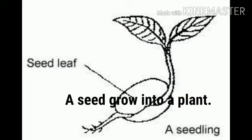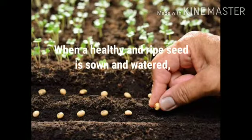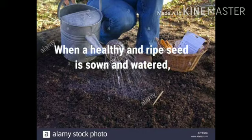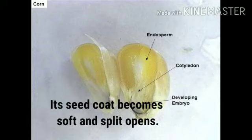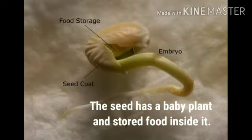We know a seed grows into a new plant. When a healthy and ripe seed is sown and watered, its seed coat becomes soft and splits open. The seed has a baby plant and stored food inside it.